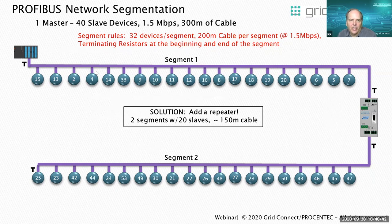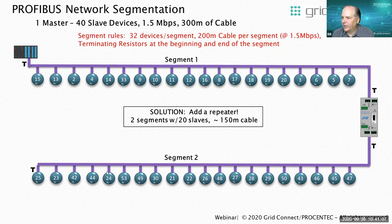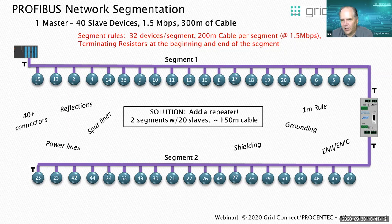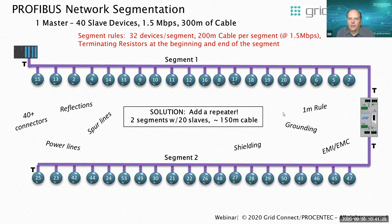We've added a repeater — now we have two segments, each with 20 slave devices and about 150 meters of cable. In fact, this is how PROFIBUS network design has been done for years; I've seen plenty of networks laid out this way that work well for a long time. However, stuff does begin to go wrong. Outside influences include power lines, grounding and shielding problems, EMI/EMC interference, not understanding all the PROFIBUS rules like one-meter rules, and reflections from interference. We also have 40-plus connections that were hand-wired, possibly without proper stripping tools, so wire nicks over time turn into wire breaks or near wire breaks causing intermittent communications.